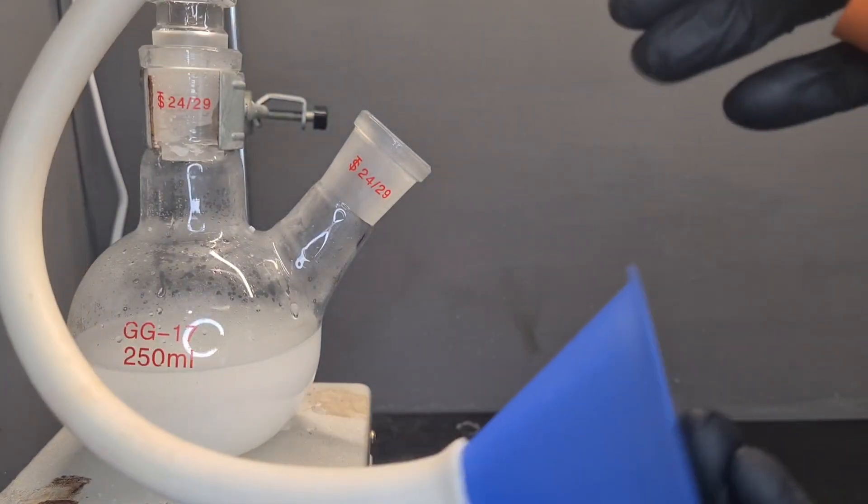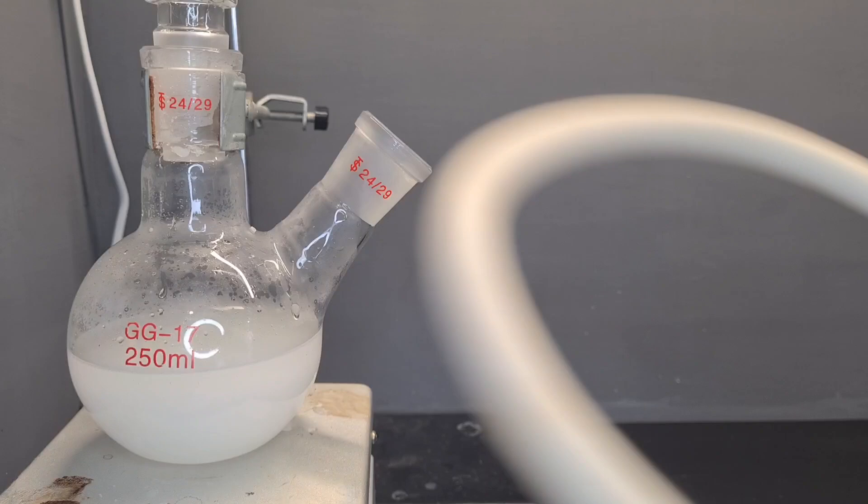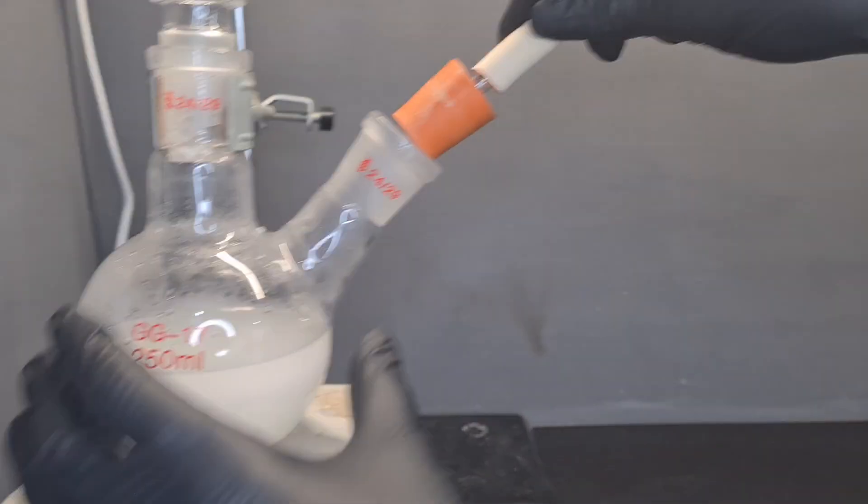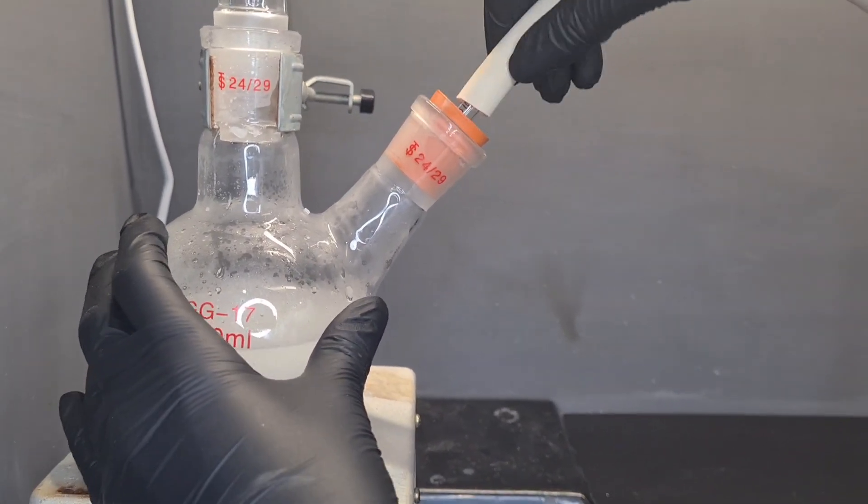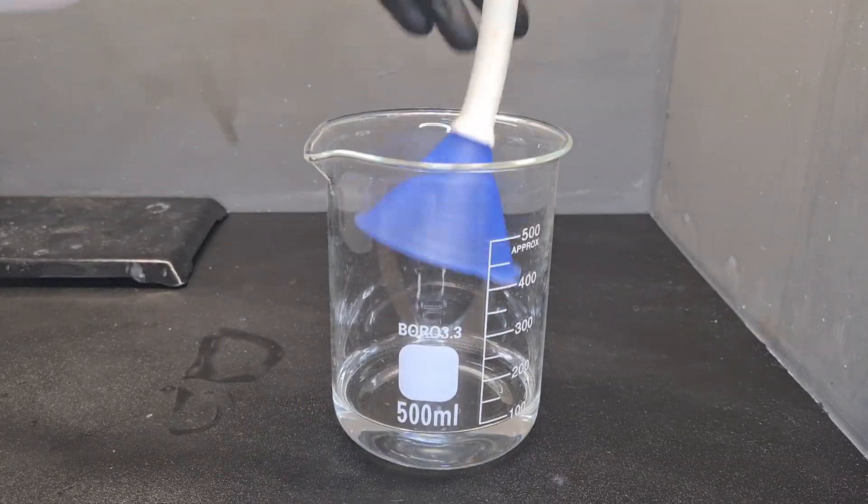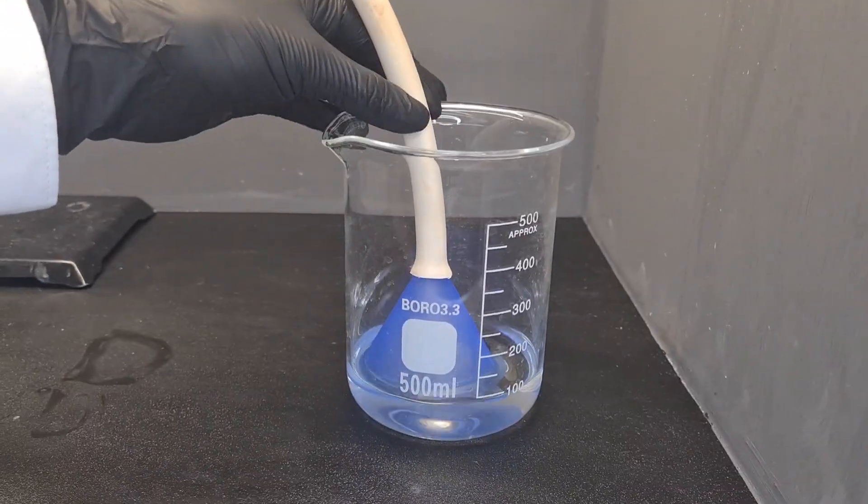Now I'm going to connect a gas bubbler setup. This funnel prevents suckback and allows the ammonia gas to dissolve faster.